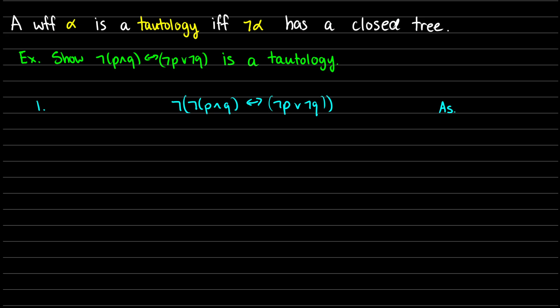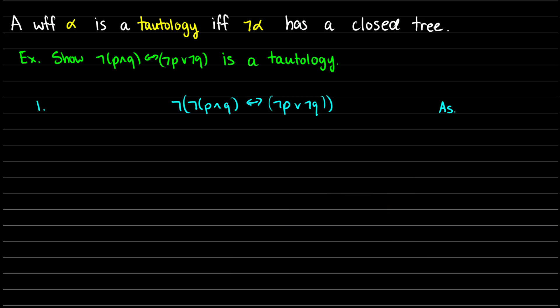The first thing we're going to have to do is not-biconditional. So remember, if we have 'p if and only if q' and it's negated, there are two possible outcomes: this means p and q have different values. So either we get not-p and q on one side, or p and not-q on the other side, so that the values are different.